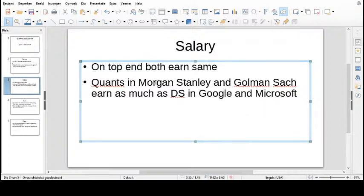Someone working with Morgan Stanley as a quant or Goldman Sachs - these are the banks - would earn pretty much the same salary as a data scientist in Google or Microsoft, because you're at the top of your game. A quant might make slightly more, but on average the salary would be pretty much the same.